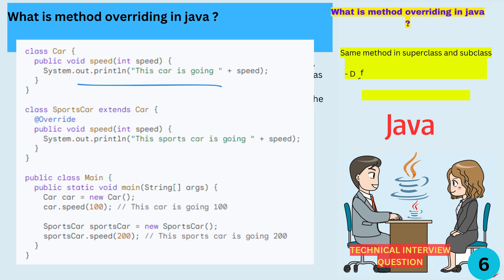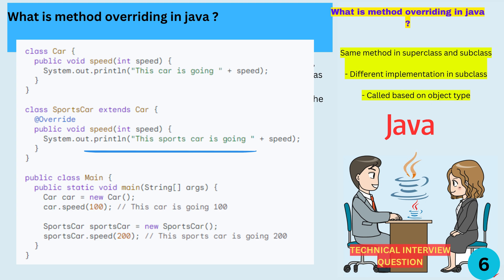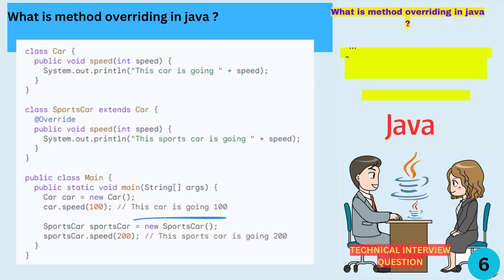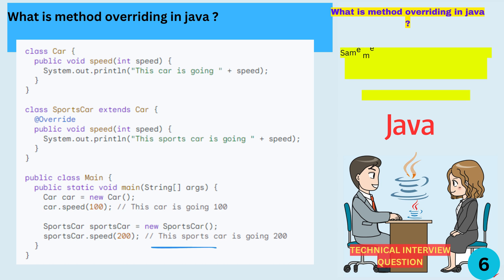Here's the code for Car: class Car, public void speed(int speed), System.out.println("This car is going" + speed). And here's the code for SportsCar: class SportsCar extends Car, public void speed(int speed), System.out.println("This sports car is going" + speed). When you call the speed method using a Car object, the Car version of the method is called. But when you call the speed method using a SportsCar object, the SportsCar version is called. This is because SportsCar overrides Car's version of speed.